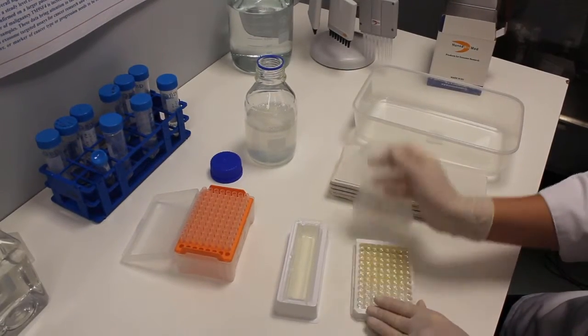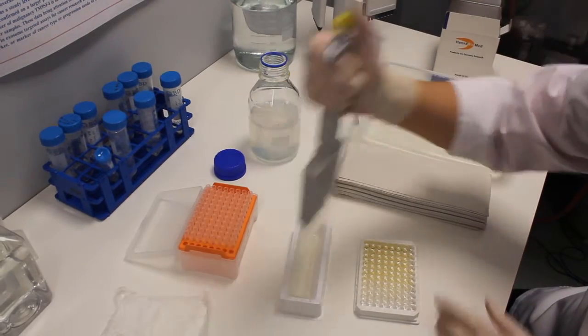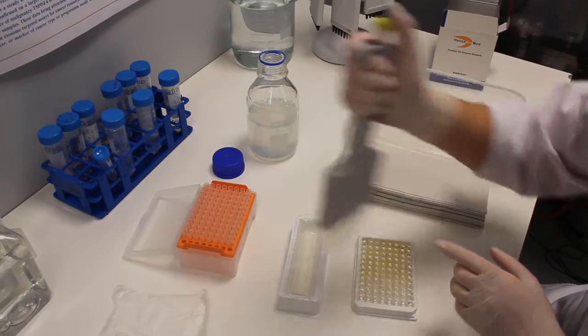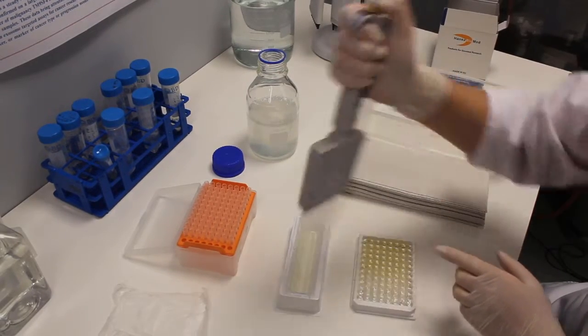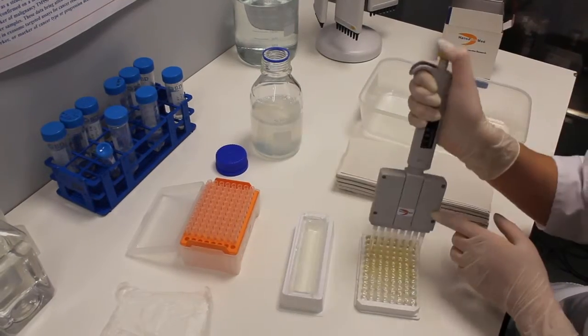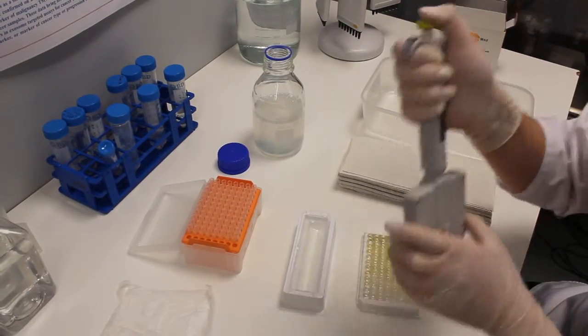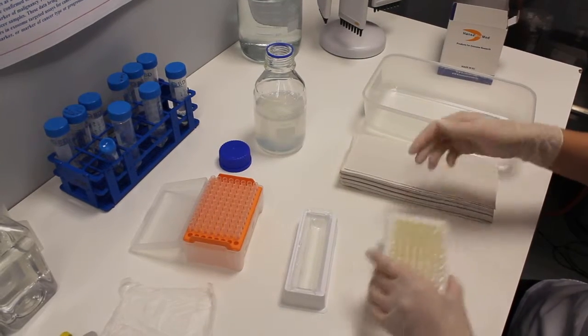First, add 200 microliters of washing buffer per well and then discard plate contents.